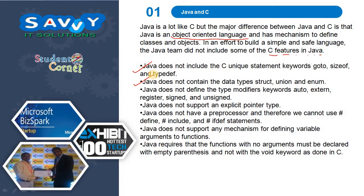Java does not contain the data types struct, union, and enum. Java does not define the type modifier keywords auto, extern, register, signed, and unsigned. Java does not support an explicit pointer type. Java does not have a preprocessor, and therefore we cannot use #define, #include, and #ifdef statements. Java does not support any mechanism for defining variable arguments to functions. Java requires that functions with no arguments must be declared with empty parentheses and not with the void keyword as done in C.